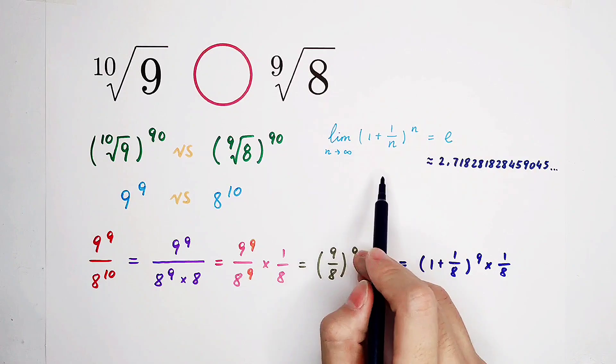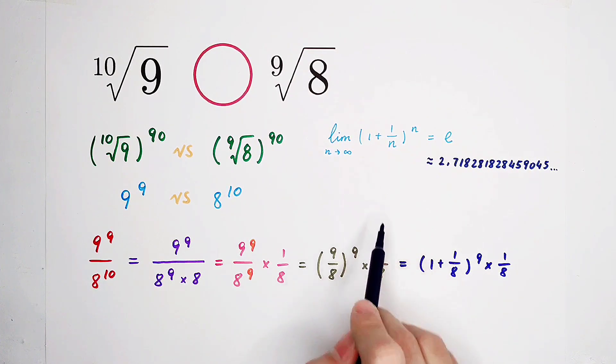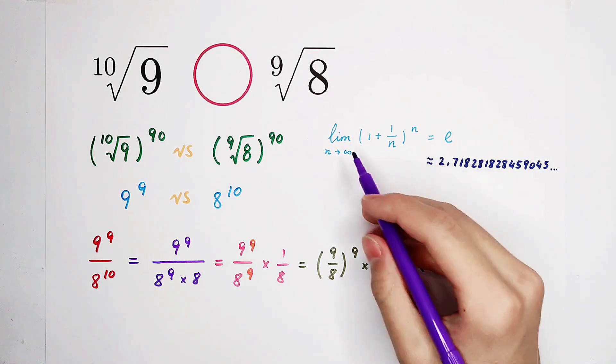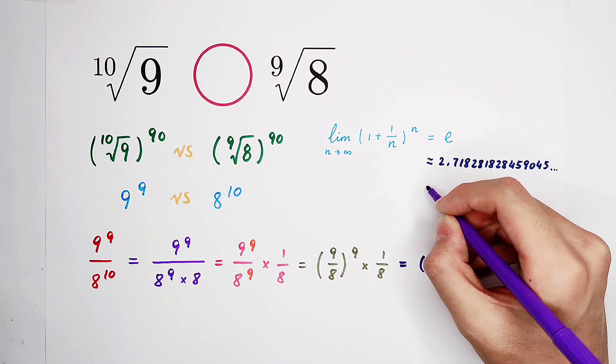So, we have this guy. When n is positive, this function is monotonically increasing. That means, for any positive number n, the result, 1 plus 1 over n, all to the power of n, is smaller than 3.